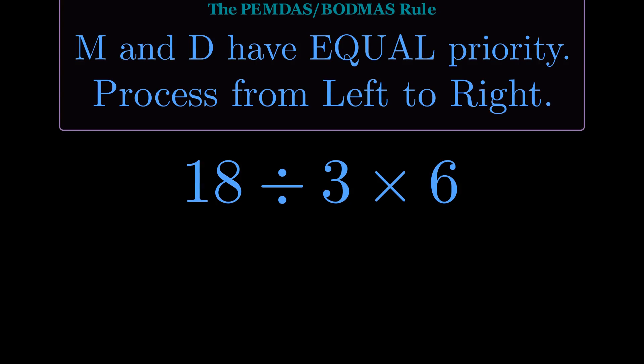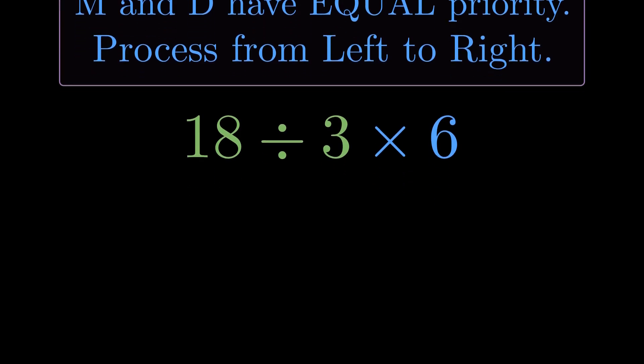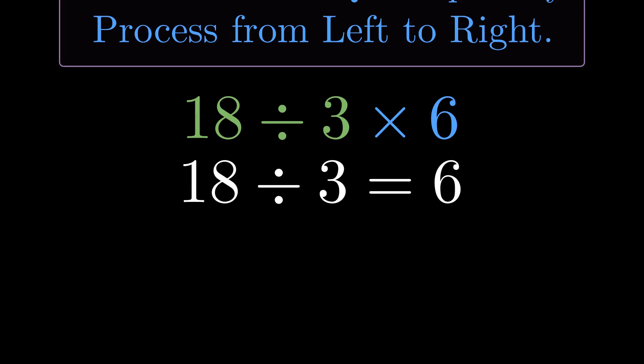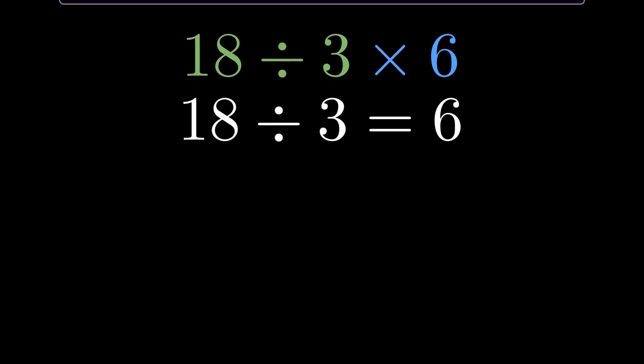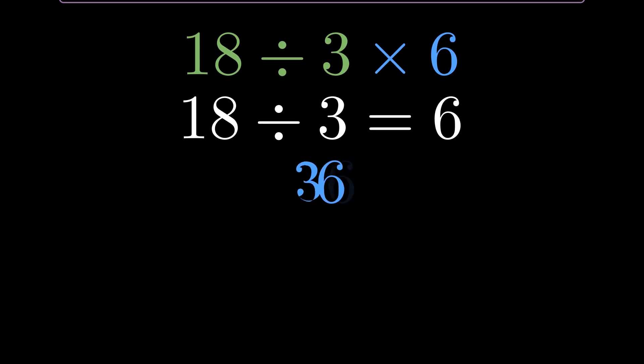We have 18 divided by 3 times 6. Following left to right, the first operation is 18 divided by 3. 18 divided by 3 equals 6. Now we have 6 times 6, which equals 36—a completely different answer.